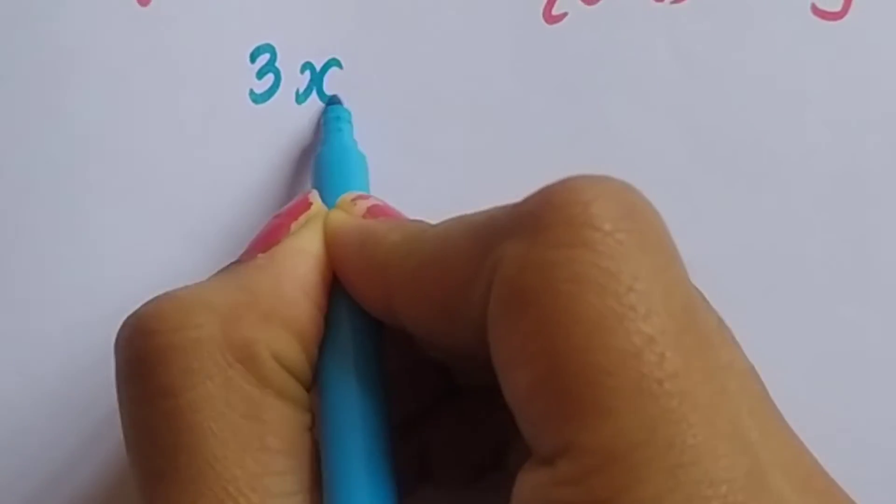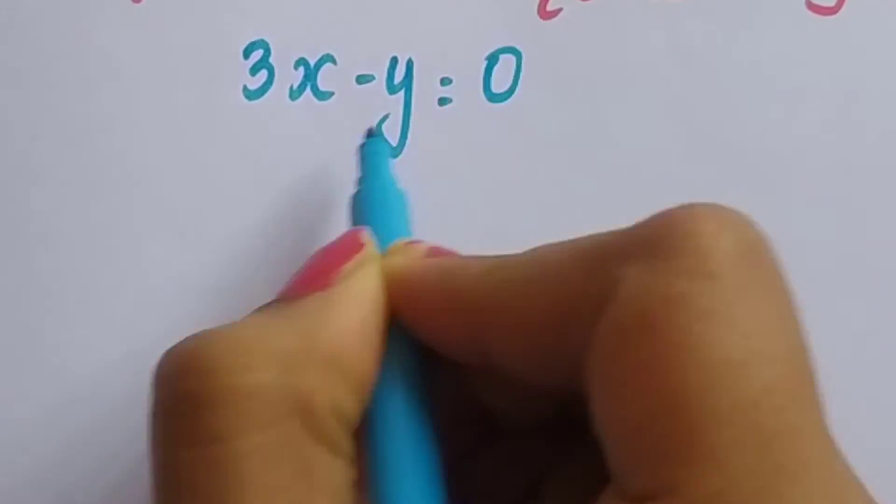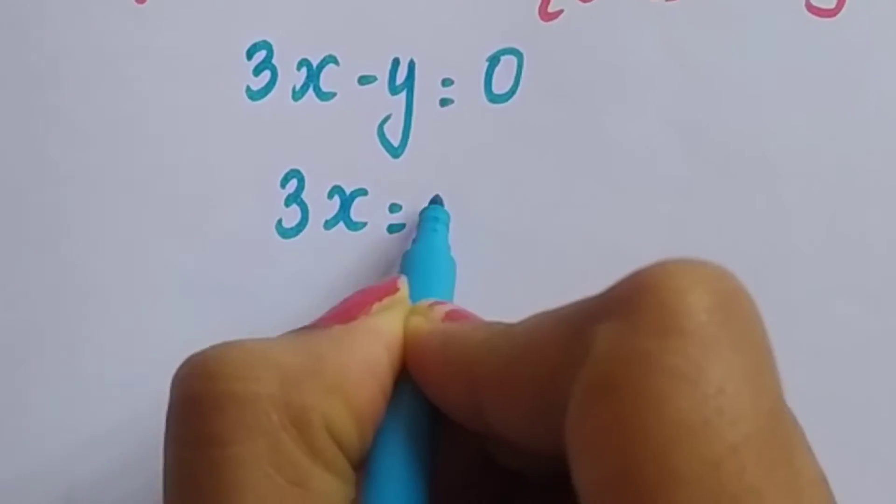For that, first let us solve this equation given. It is given 3x minus y is equal to 0, so hence 3x will be equal to y.